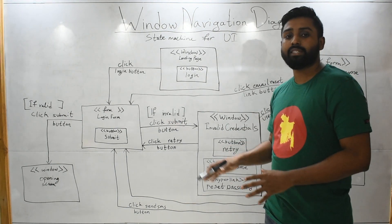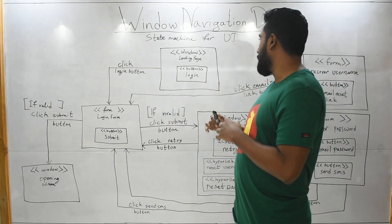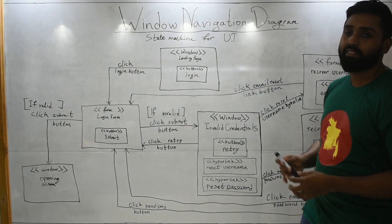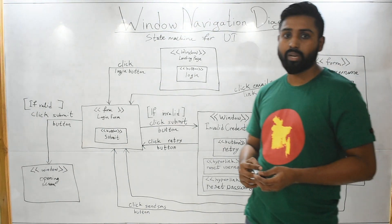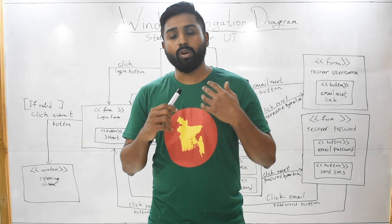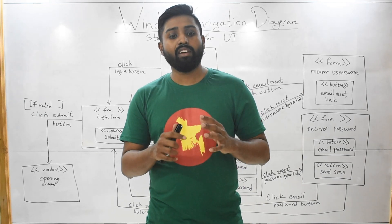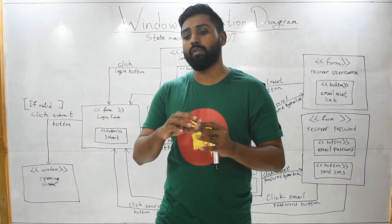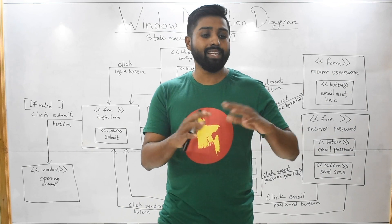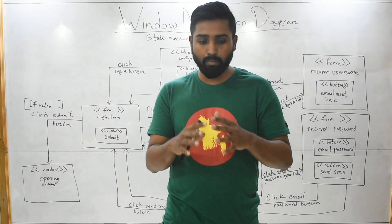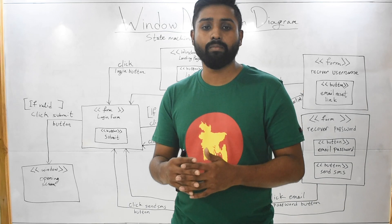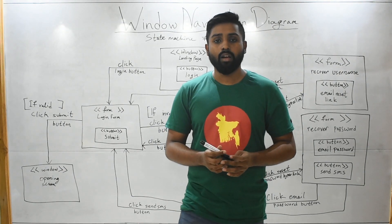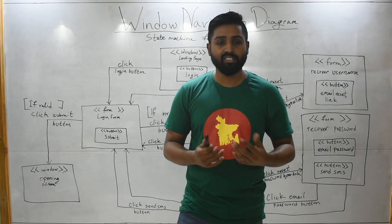That more or less completes your login system, and it defines this state machine for UI using this example. A window navigation diagram is a small summary of where your window will go from one click to another, and there are many processes you can draw using this diagram — here I have shown you just one of those examples. Hope to see you in my next videos.